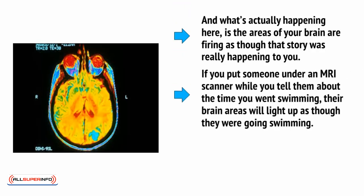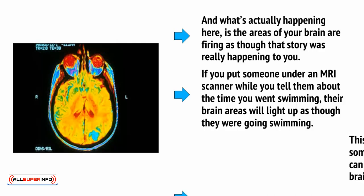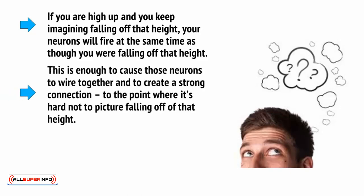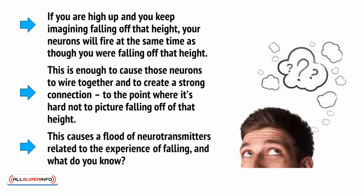If you put someone under an MRI scanner while you tell them about the time you went swimming, their brain areas will light up as though they were going swimming. And this is how simply imagining or picturing something can create associations in your brain. If you're high up and you keep imagining falling off that height, then your neurons will fire as though you were falling off that height. This is enough to cause those neurons to wire together and create a strong connection, to the point where it's hard not to picture falling — causing a flood of neurotransmitters related to the experience of falling, and you pass out in a sweaty heap.